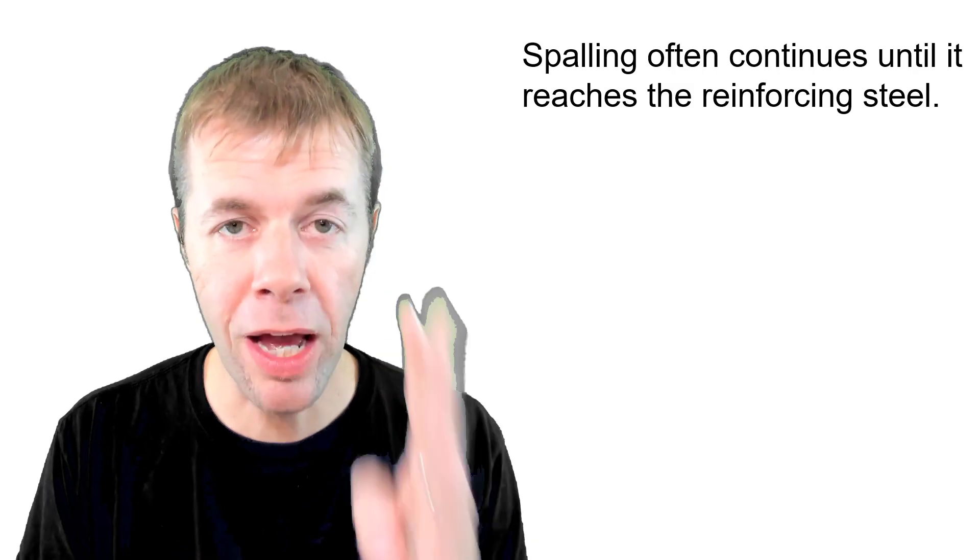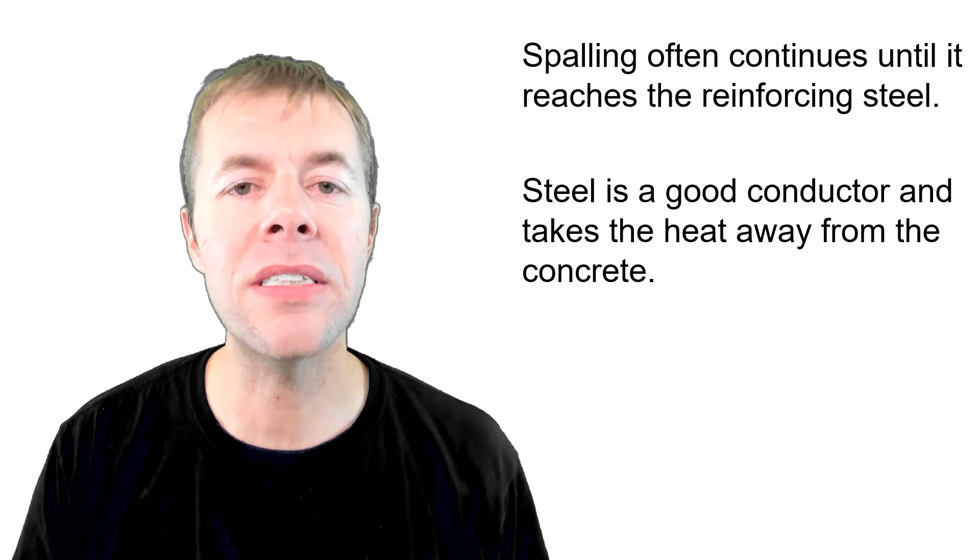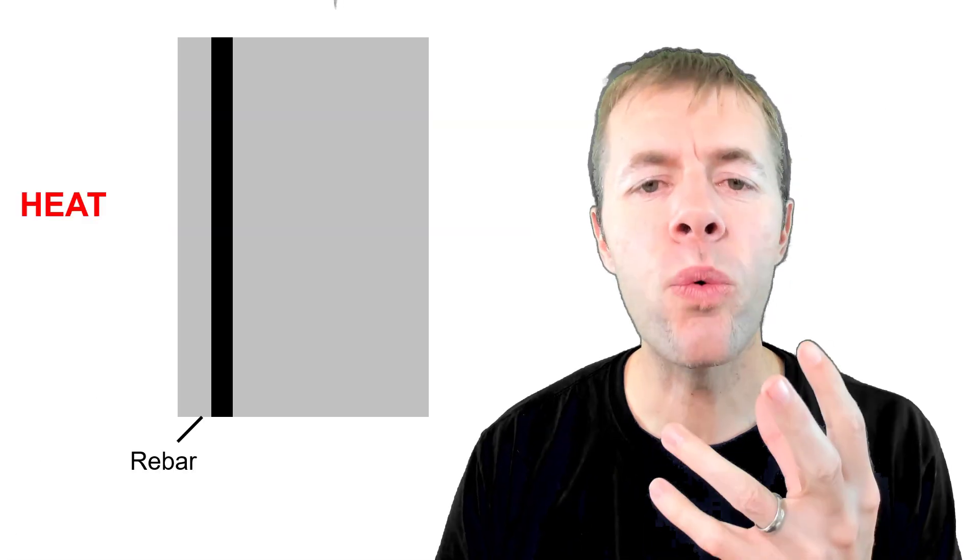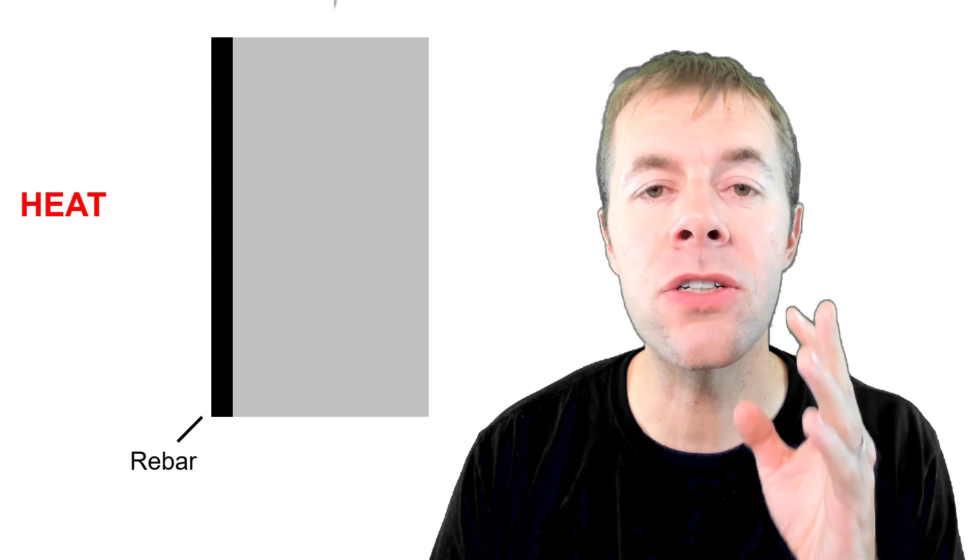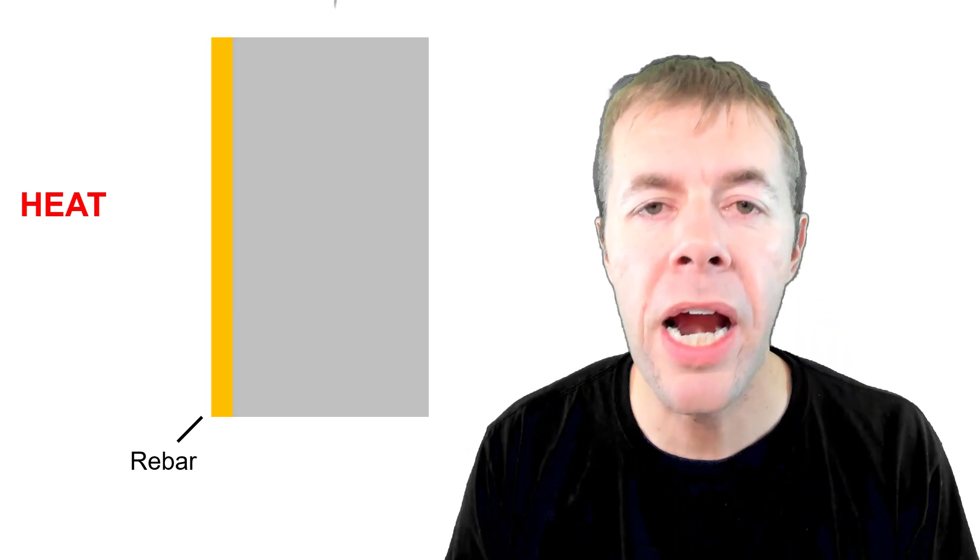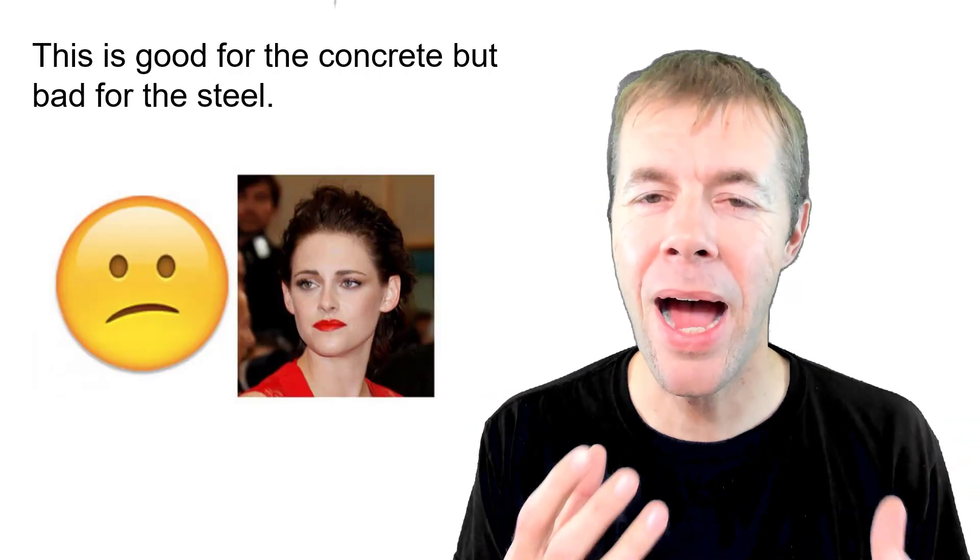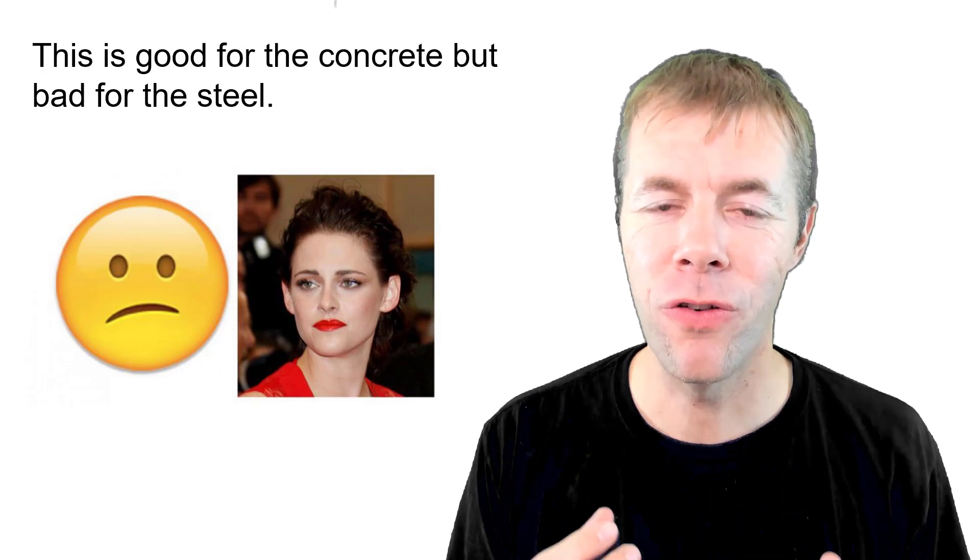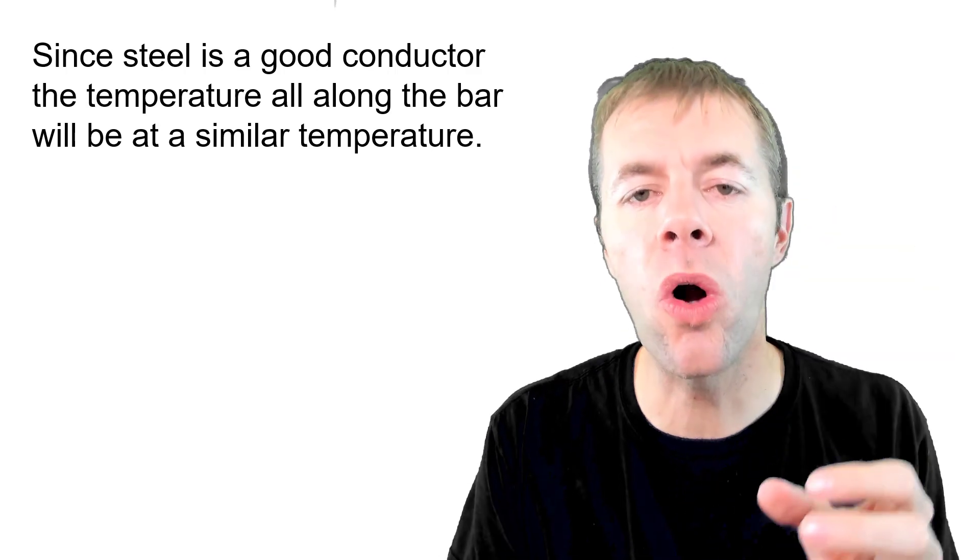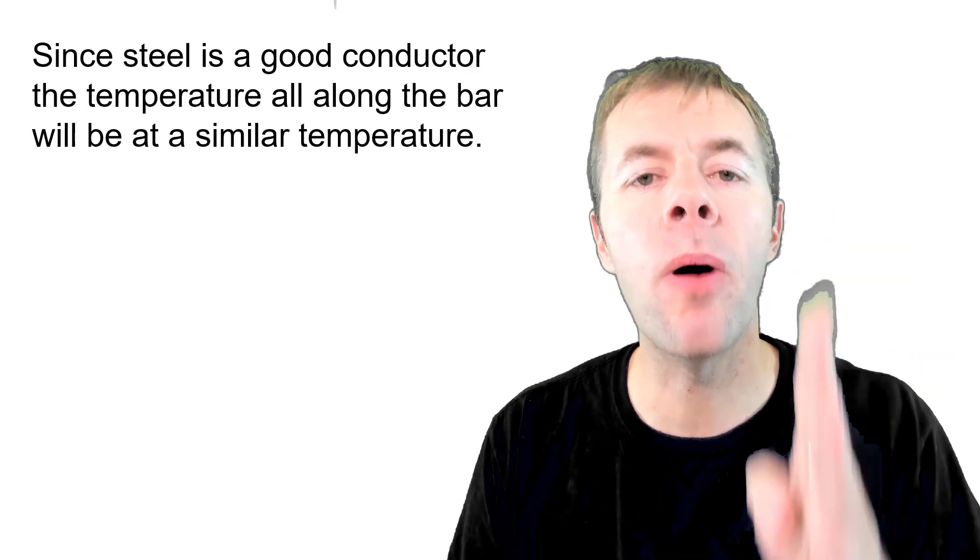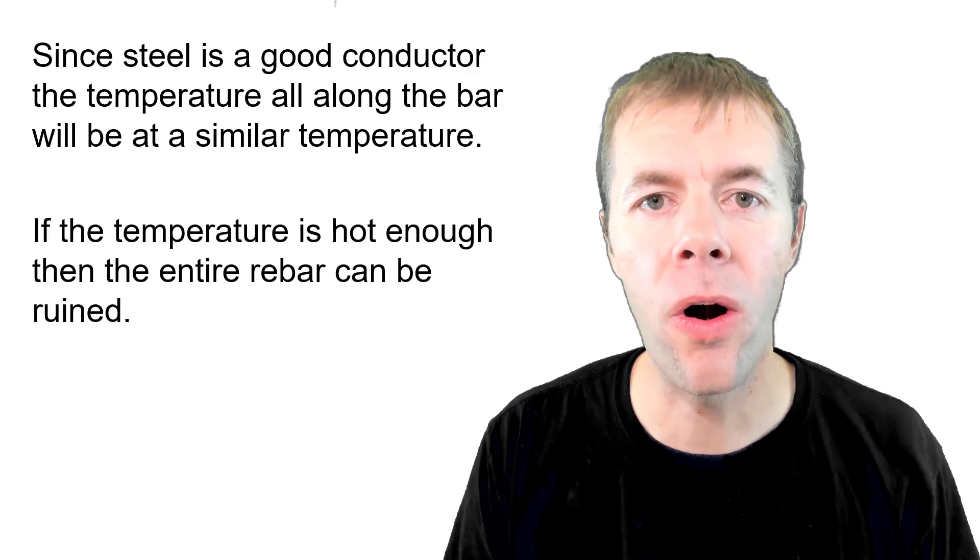Spalling will often continue from the outside surface and keep going until it reaches the steel. Steel is a great conductor and it carries the heat away from the concrete. If I have a rebar embedded inside this concrete, once the surface starts to heat up and spall off, now all of a sudden when it gets to the level of the rebar, the rebar will carry the heat away in both directions. Now this is great for the concrete, but it's bad for the steel and ultimately bad for your concrete member. Since steel is this good conductor, it carries the temperature all along the bar. That means the entire bar will be at an almost constant temperature and if the steel gets hot enough, then the entire bar can be ruined.